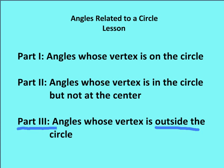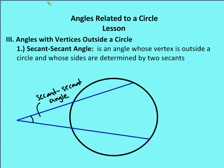There are three different types of those angles. First is a secant-secant angle — an angle whose vertex is outside a circle and whose sides are determined by two secants. I have secant 1 and secant 2 here. I could label one secant as AC and the other as AB. So that's an angle formed outside of the circle by two secants.